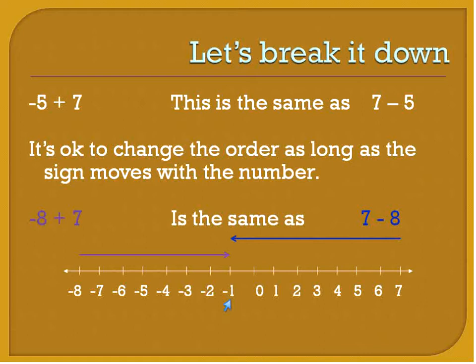So our final answer is going to be negative. We can use the number line for all these cases. Or you can look at it this way: you find the difference between these two numbers and you keep the symbol from the larger number. So the difference between 8 and 7 is 1, and the symbol or the sign negative because 8 is larger than 7.